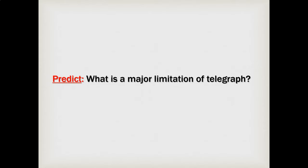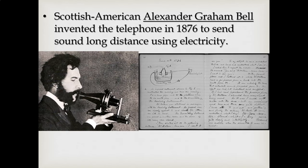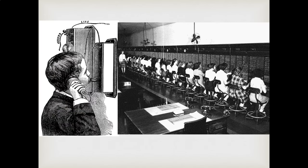A major limitation of the telegraph is that it doesn't carry voice. So a Scottish-American inventor named Alexander Graham Bell, in 1876, worked to fix that and came up with the telephone — which literally means 'sound from a distance.' Like the telegraph, it works along electric lines, sending pulses that replicate sound on the other side. The telephone made the world a much smaller place because now you could talk to someone in real time from hundreds or thousands of miles away. To connect people, operators would work a switchboard, literally plugging one line into another — just like in old movies where someone picks up the phone and says, 'Operator, can you connect me to so-and-so?'